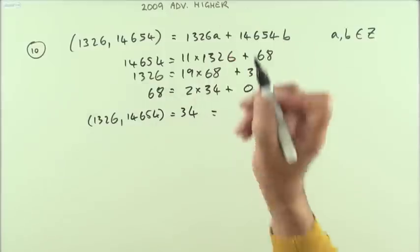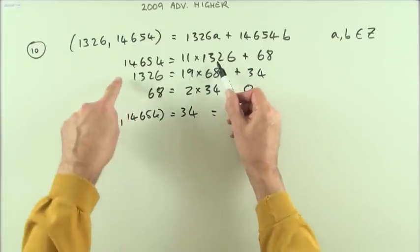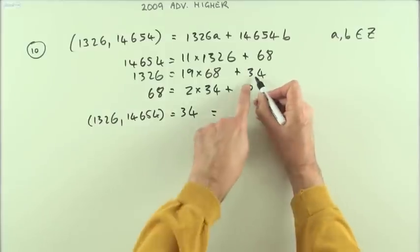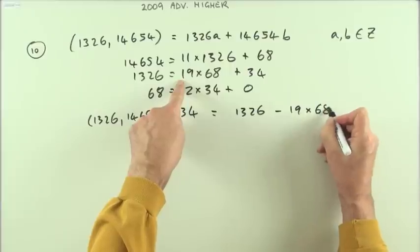And I can backtrack along that to pick up these multiples that I used to go back to the original numbers. So starting with this 34 here, that 34 equals 1326 take away 19 lots of 68.